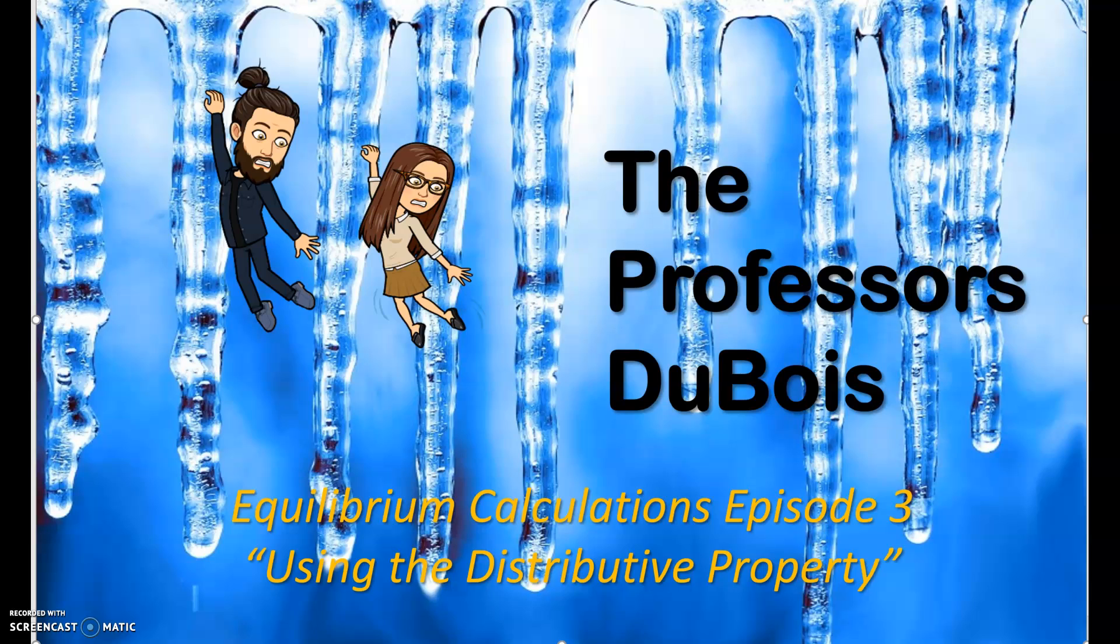Welcome back to the Professor's Dubois channel. This is Professor Victoria and Professor Corey. We are continuing on with our equilibrium calculations series. This is episode 3, so go back to episode 1 and 2 if you've missed those. And today, specifically, we are going to be going through a calculation that uses an ice table to calculate the equilibrium concentrations given K. And specifically, we're going to be using and showing you how to use the distributive property.